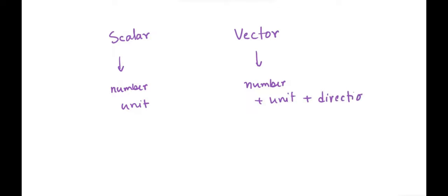Now, if a quantity needs to be described by direction, it doesn't automatically qualify as a vector. If you talk about current, for example, we often indicate its direction by an arrow, but it doesn't necessarily act as a vector. In order to be a vector, it not only has to have the property of direction, but also it needs to be added geometrically. So addition, subtraction — everything has to be done in terms of geometry. That means 5 plus 5 will not always make 10; you also have to consider its geometric orientation. It can be anything from 0 to 10.